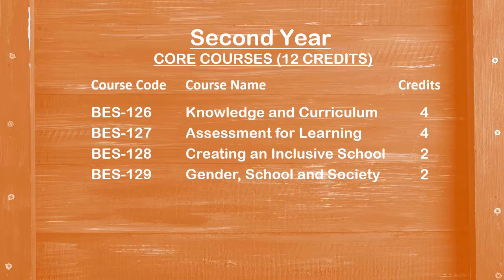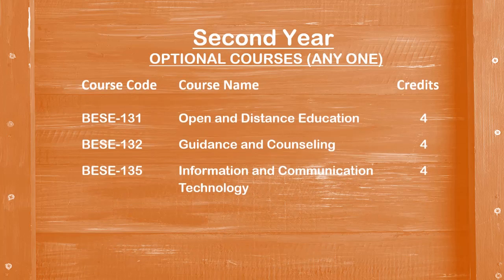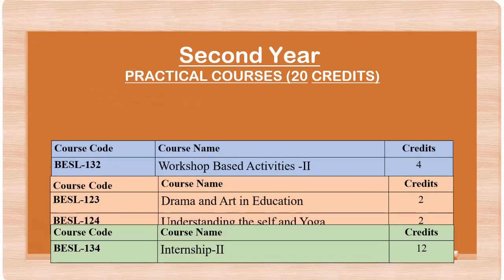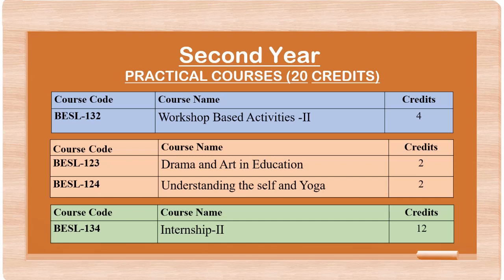In the second year, we offer four core courses of 12 credits: Knowledge and Curriculum, Assessment for Learning, Creating an Inclusive School, and Gender, School and Society. The first two courses are of four credits each and the last two are of two credits each. We offer one optional course — currently three options are available: Open and Distance Education, Guidance and Counseling, and Information and Communication Technology; you need to opt any one. There is also a workshop of four credits and two EPC courses — Drama and Art in Education, and Understanding the Self and Yoga — each of two credits. Internship Two is of 12 credits and 16 weeks duration.